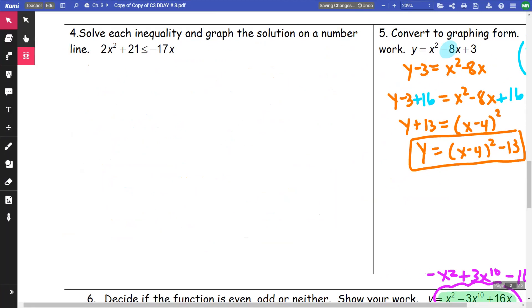So on this one, 2x squared plus 17x, and I'm going to bring the 17x over, plus 21 less than or equal to 0.